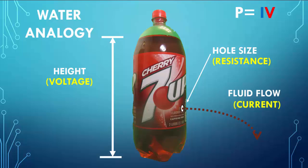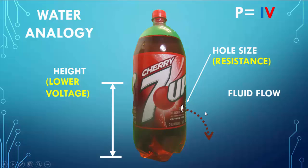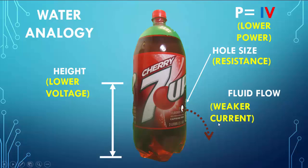Now, if you reduce the height of the fluid, you have a lower voltage, and you keep the hole size — the resistance — the same. But what happens to the current flow? Well, you should have a weaker current, which then implies when you have a lower voltage and a weaker current, you have lower power.